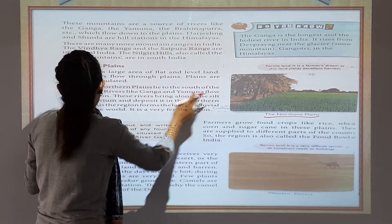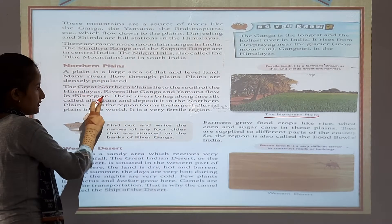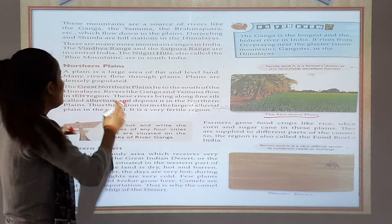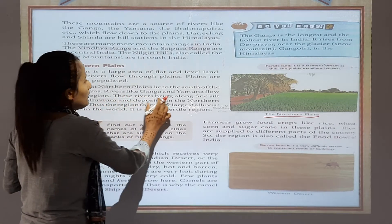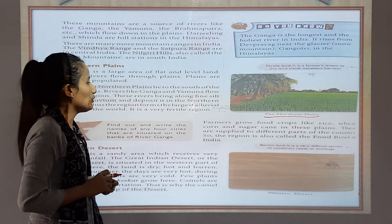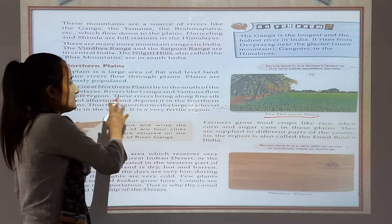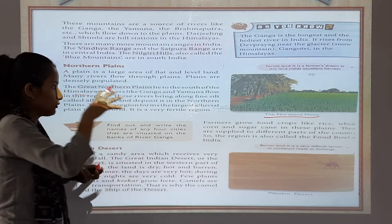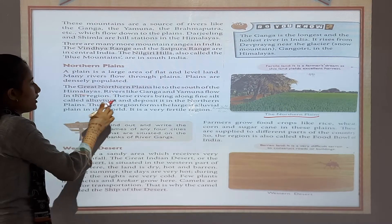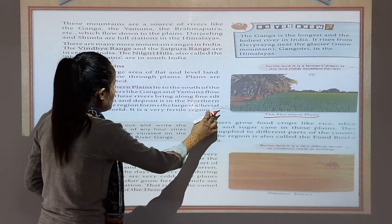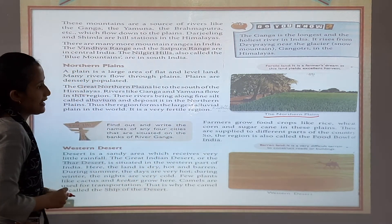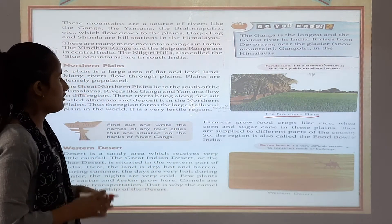Rivers like Ganga and Yamuna flow in this region. These rivers bring along fine soil called alluvium and deposit it in the northern plains. This makes the alluvial plains very fertile. In fact, this region forms the largest alluvial plains in the world.